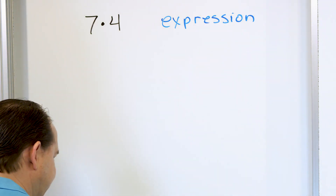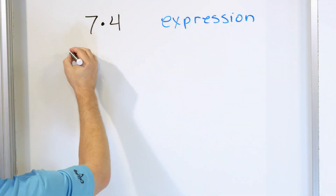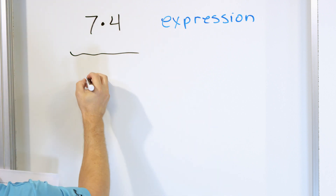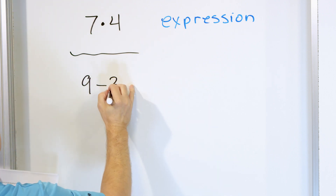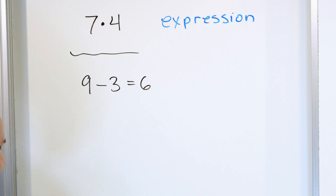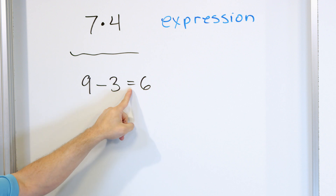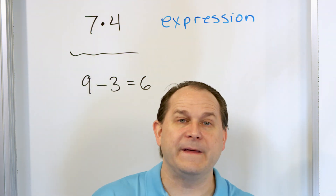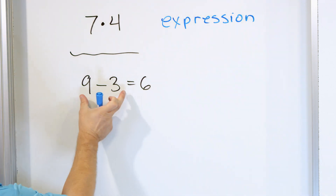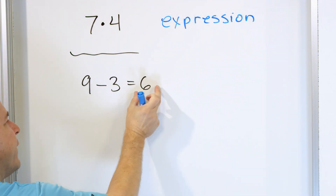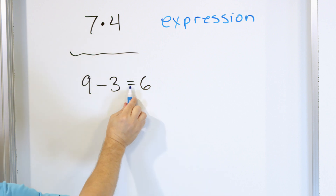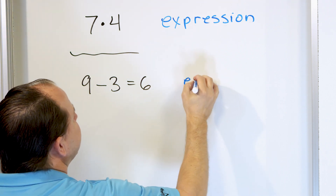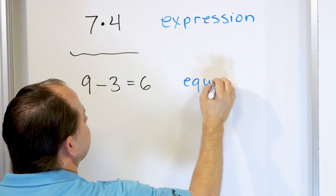Now let's take the next example. Let's say that I tell you 9 minus 3 is equal to 6. Is this an equation or an expression? Well, the only thing you have to ask yourself is, does it have an equal sign? Yes, it does. Equation means equals, so something is equal to something else. There's something on the left-hand side of the equal sign and something on the right-hand side of the equal sign. There is an equal sign, so this is an equation.